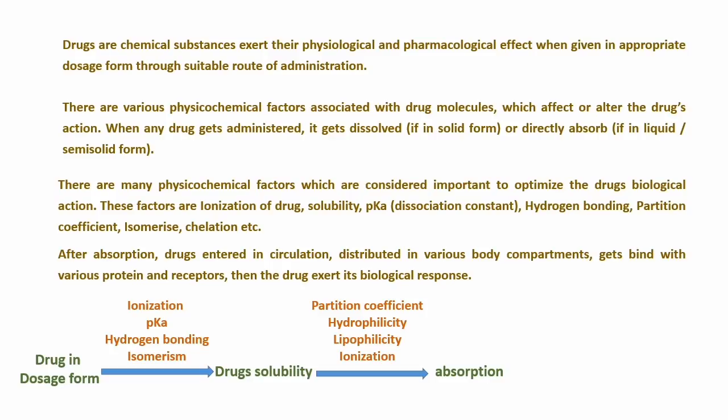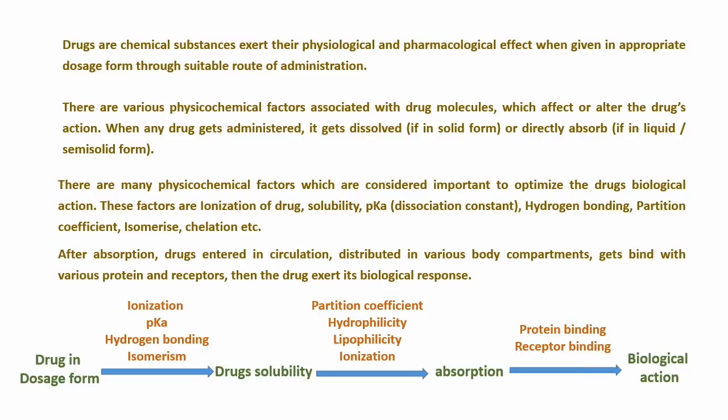Drug solubility also affects ionization and absorption. After absorption, drug binds to the receptor, in which the main role is played by hydrogen bonding, isomerism, and complexation. After drug-receptor binding, the drug's main biological action is shown. We will see each individual factor in detail one by one in further videos.